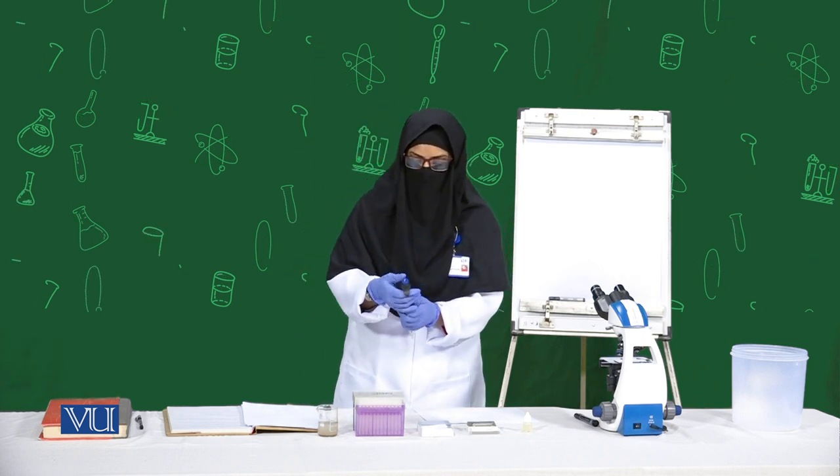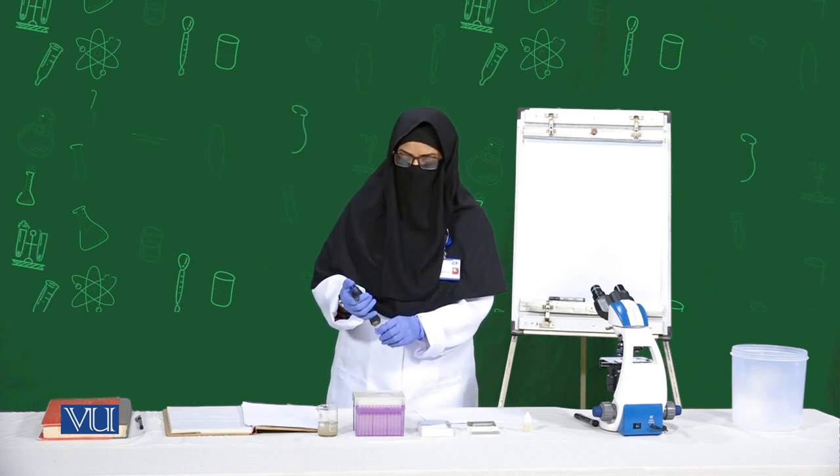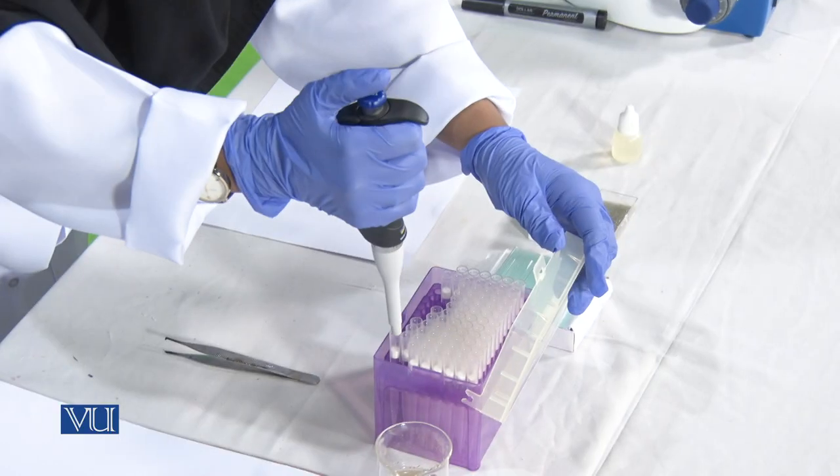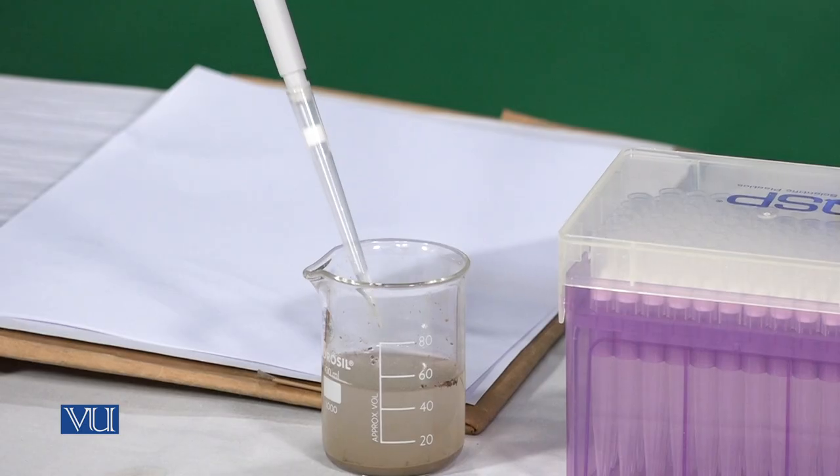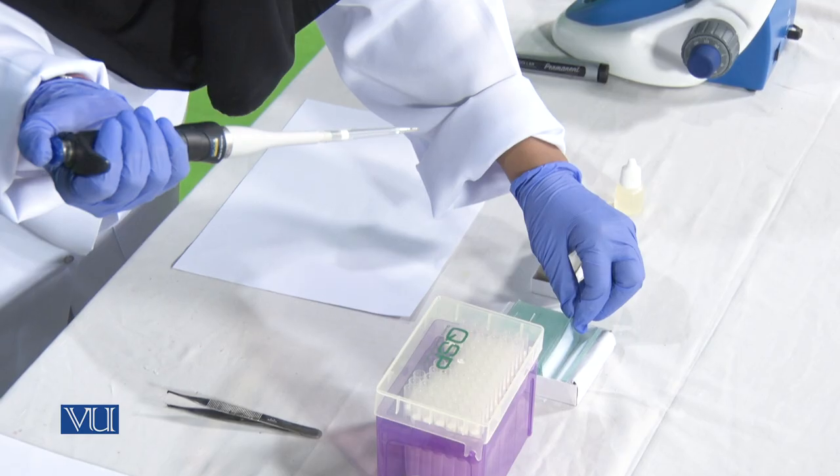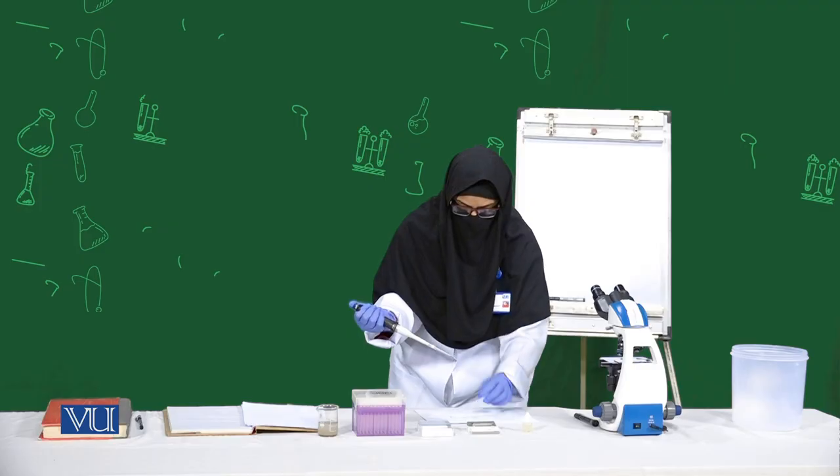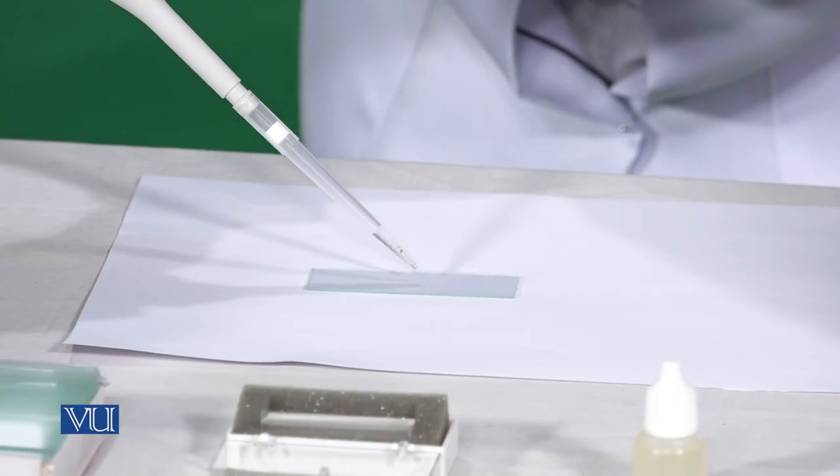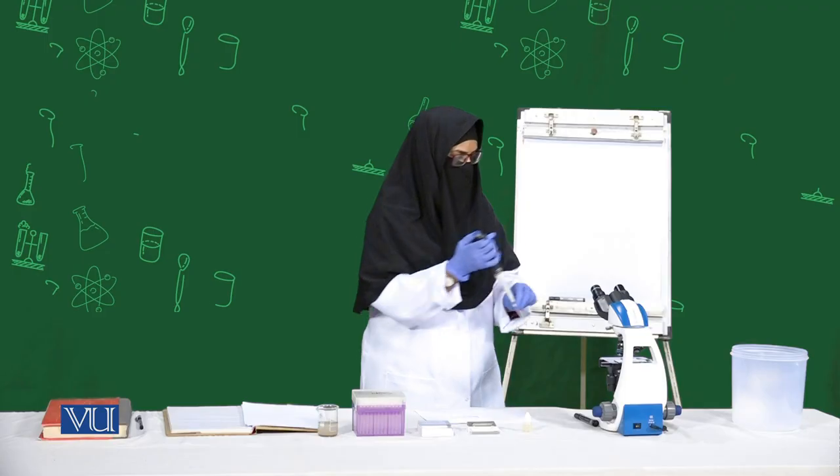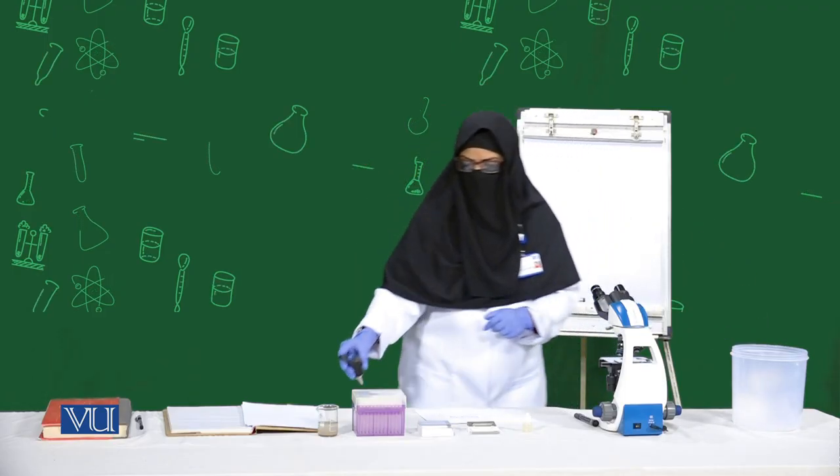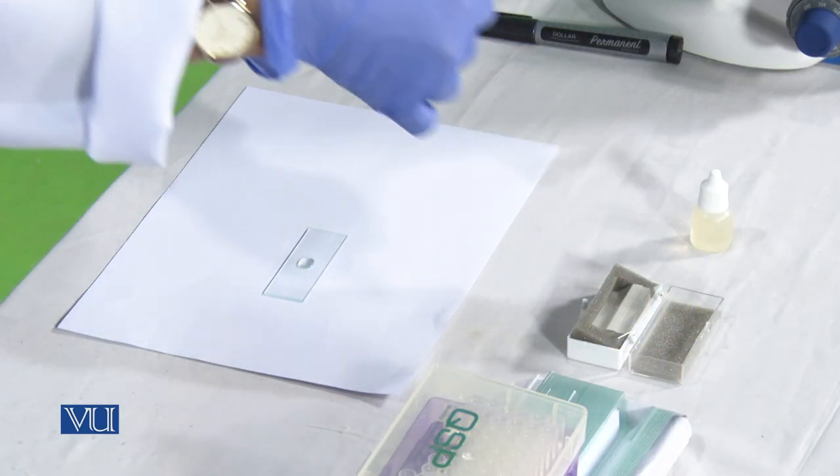I have set the pipette for proper measurement at 100 microliters. I will take 100 microliters of pond water on a clear slide, put the water, and discard the tip. Then we'll cover it with the cover slip.